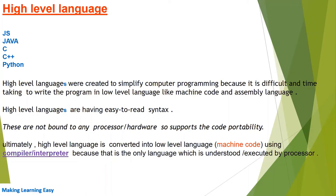Suppose you have written C code on a machine having a Windows operating system and an Intel processor. That C code is not bound to the Intel processor — you can use that C code on any other processor or machine, like AMD or ARM, or any other architecture like 64-bit or 32-bit. This is code portability: you can use the program written on one machine on another machine.